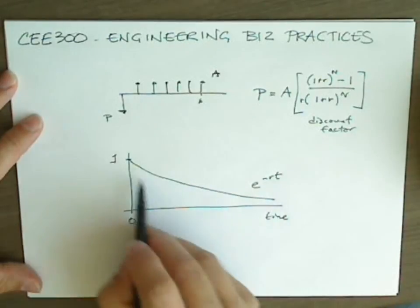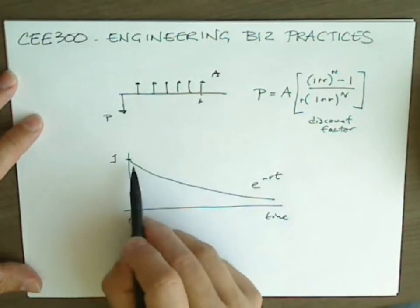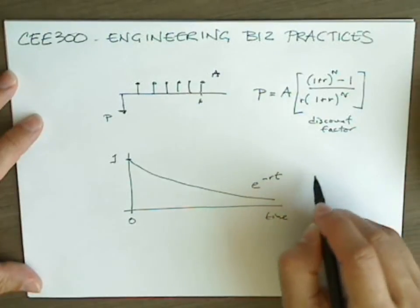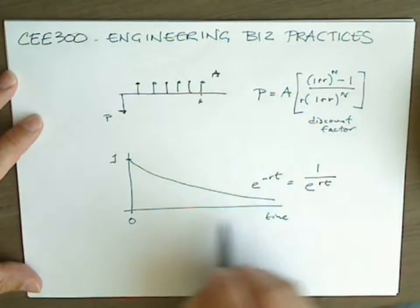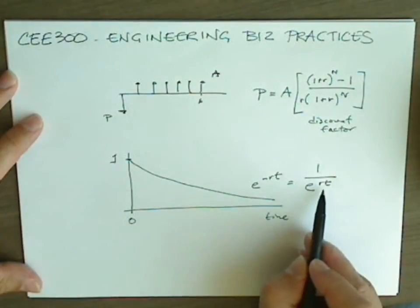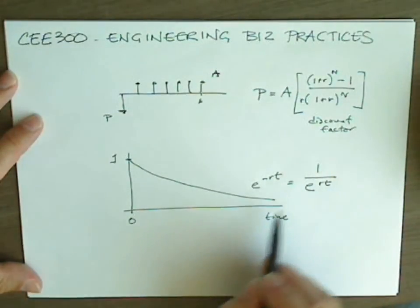The formula we've been using is this classic exponential decay formula, e to the negative RT, which is the same as 1 over e to the RT, and now you can see why at time equal infinity, the discount factor is going to be 0.